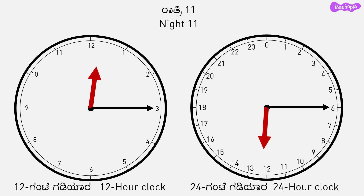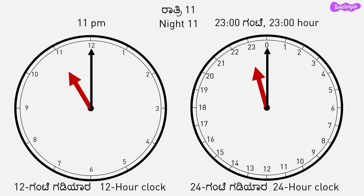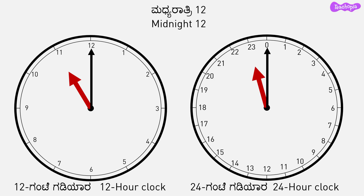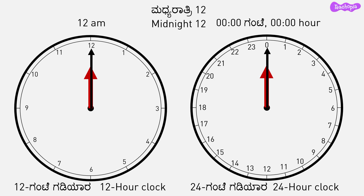Night 11: the 12 hour clock will show 11 p.m., and the 24 hour clock will show 23:00 hours. Midnight 12: it will be 12 a.m. in the 12 hour clock, and in the 24 hour clock it will be 0 hours. Thus, in 24 hour format, referring to a.m. or p.m. does not exist.